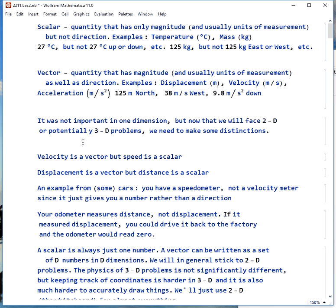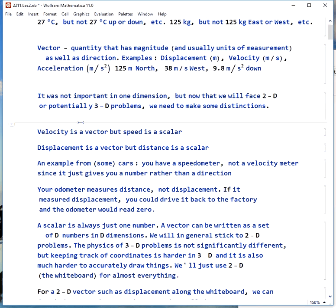In one dimension it wasn't important, but in 2D or potentially 3D problems, we do have to make some distinctions between vectors and scalars. Velocity is a vector, speed is a scalar. Displacement is a vector, distance is a scalar.